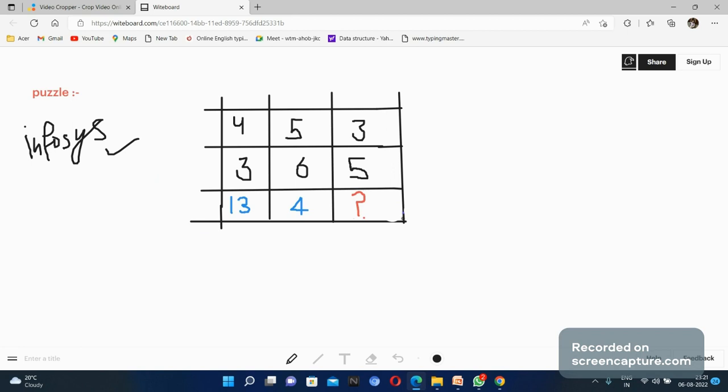In the first line, when we add 4 plus 3, we get 7. When we square 7, we get 49. When we add 4 plus 9, it equals 13. In that way, 13 will come.